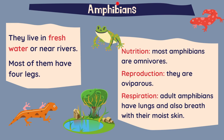Let's move on now to amphibians. They live in fresh water or in lands near rivers. Most of them have four legs. Most amphibians are omnivores — they eat both meat and vegetables. For reproduction, they are oviparous and lay eggs. And for respiration, adult amphibians have lungs and also breathe with their moist skin.